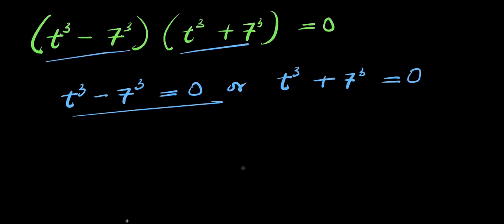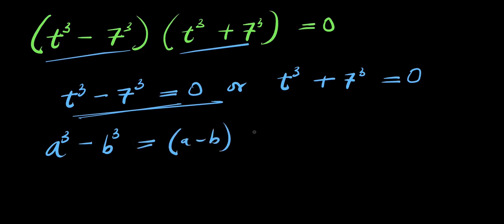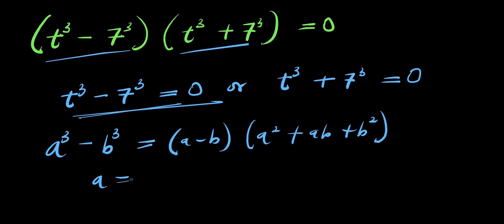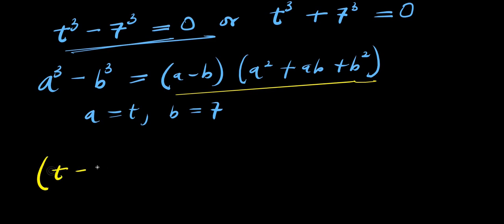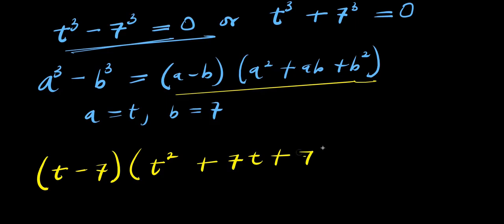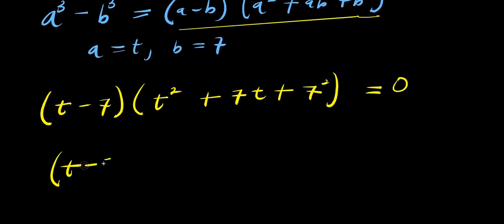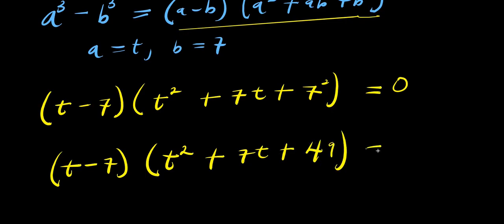Let's start with t to the power of 3 minus 7 to the power of 3 equals 0. To solve this we expand using the identity: a cubed minus b cubed equals a minus b times a squared plus ab plus b squared. In this case a equals t and b equals 7. So we have t minus 7 times t squared plus 7t plus 7 squared, which gives t minus 7 times t squared plus 7t plus 49, and this equals 0.